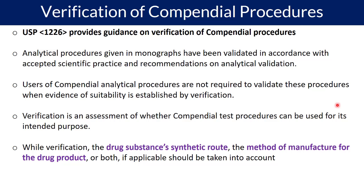During verification, you also need to consider the drug substance's synthetic route. If you are using an API test procedure, you need to consider the method of manufacture as well. The synthetic route can give an altogether different impurity profile. The degradation pathway may be similar, but process impurities may differ. You need to understand whether your manufacturer's route of synthesis is similar to that used for the compendial procedure.